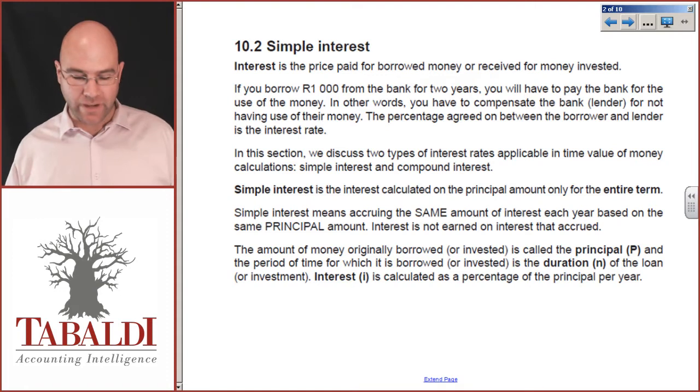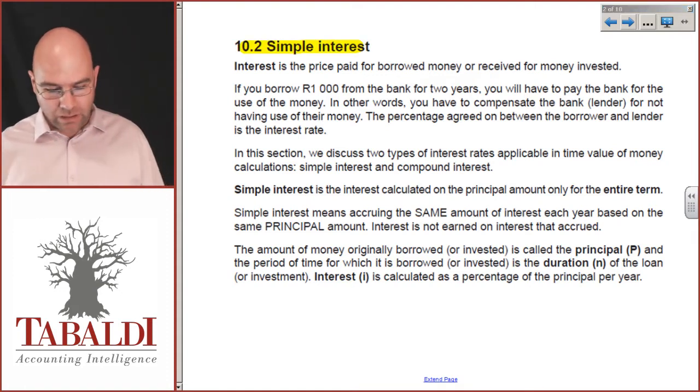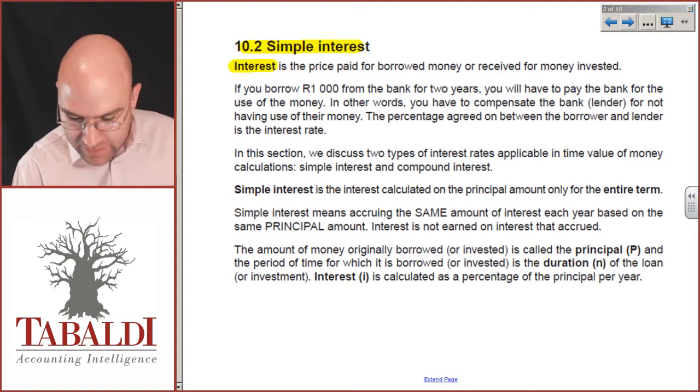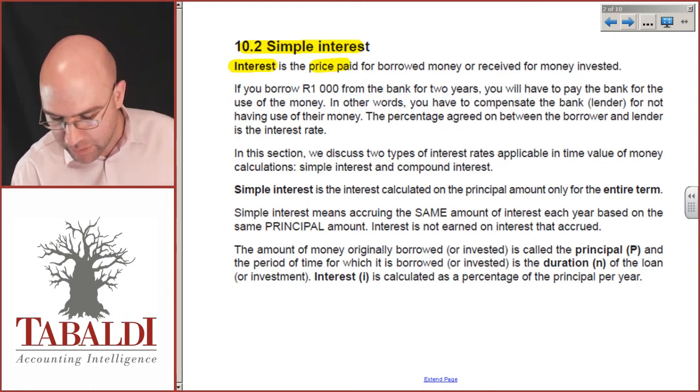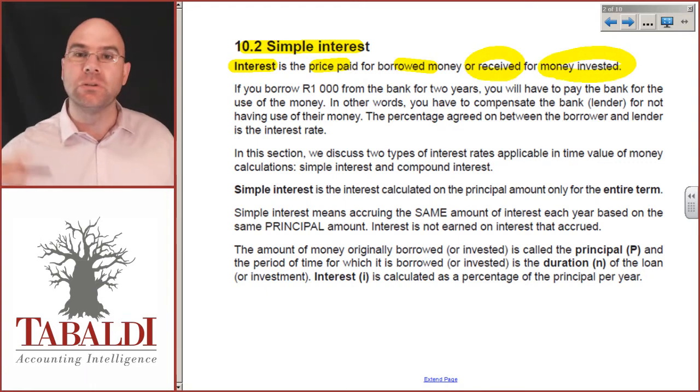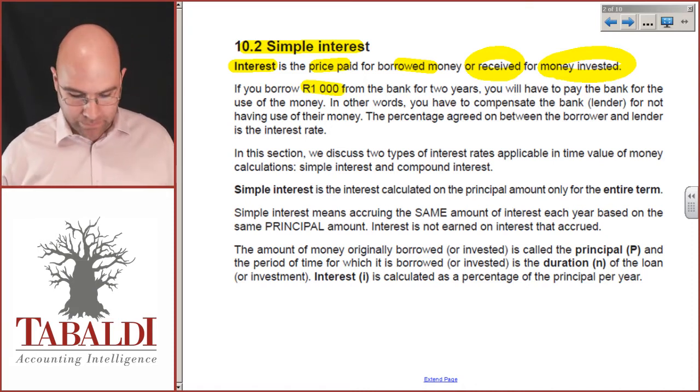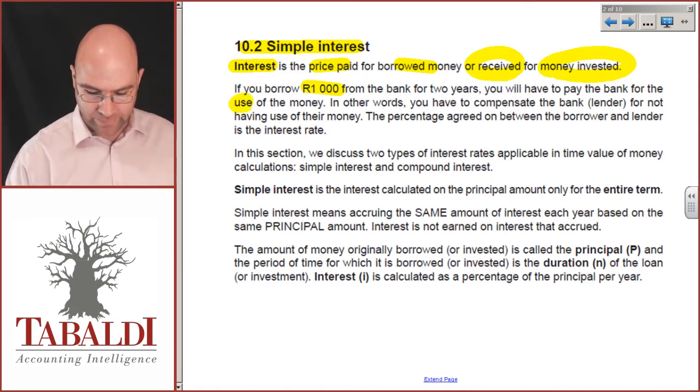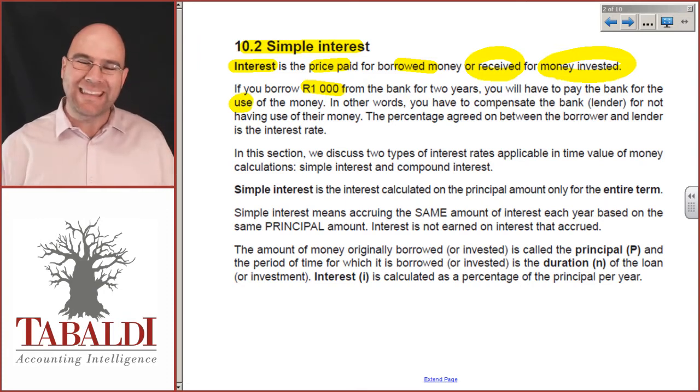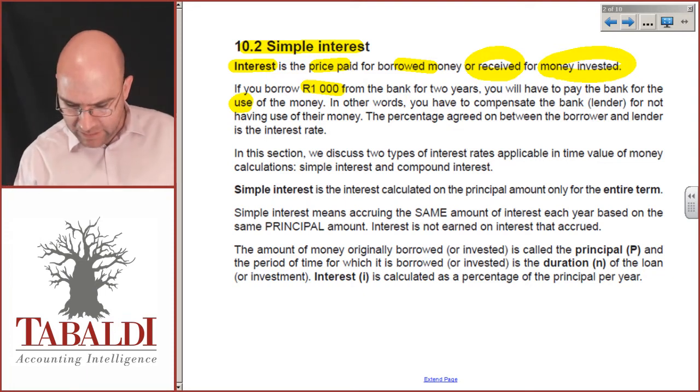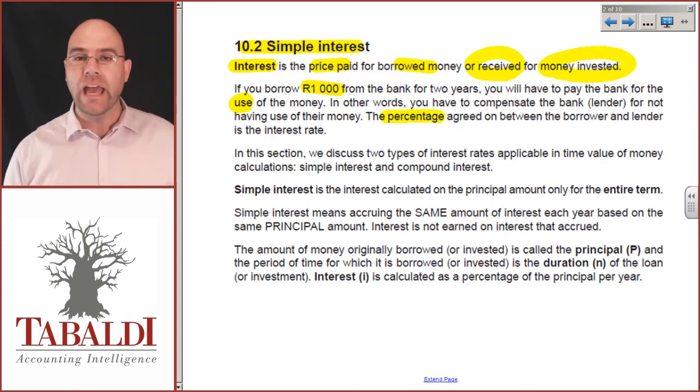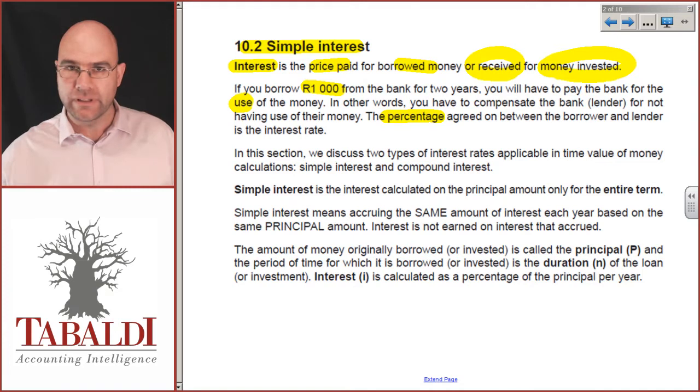On page 155, they start talking about simple interest. What is interest? Interest is the price paid for borrowed money or received for money invested when you lend it to someone else. Obviously, if you borrow money, say a thousand rand from the bank for two years, you'll have to pay the bank for the use of the money. That's what the bank does. It lends money out and gets interest back.